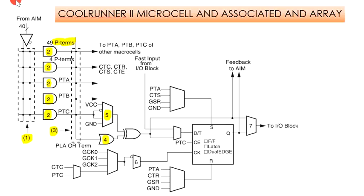By complementing or not complementing the OR gate output, a function can be implemented as either a product of sums or a sum of products. The XOR gate output can be routed directly to the input-output block or to the macro cell flip-flop input. The flip-flop can be programmed as a D, CE, or T flip-flop, as an ordinary flip-flop, as a latch, or as a dual-edge-triggered flip-flop which can change state on either clock edge.